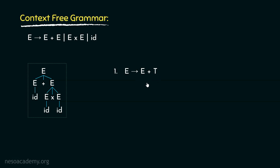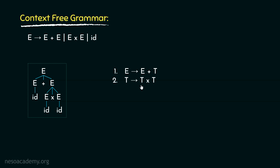So, the first rule is now e can be rewritten as e plus t. With this new non-terminal uppercase T, we have ensured that the production rule is left recursive. Now, the second rule should be rephrased in such a way that it can only expand the non-terminal uppercase T. Also, we have already taken care of the addition operator, so now we will have to facilitate the multiplication operator. So, the second rule is t can be rewritten as t into t.